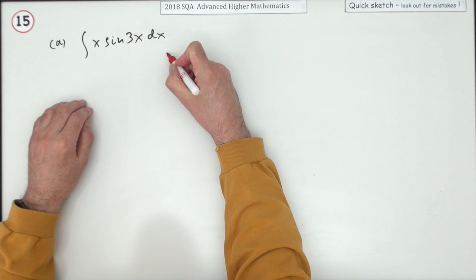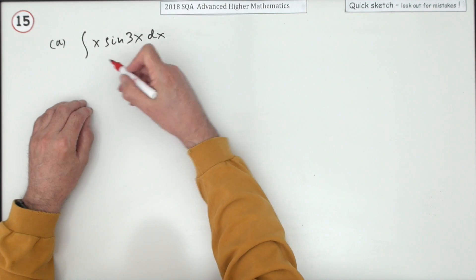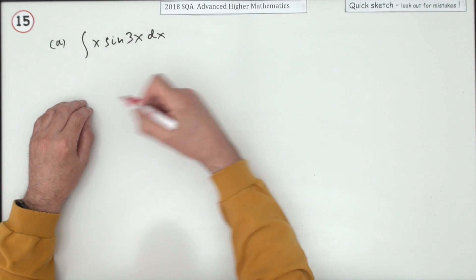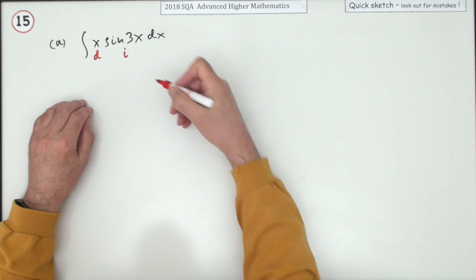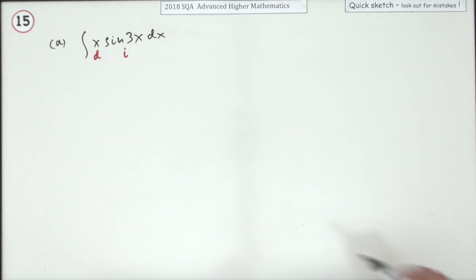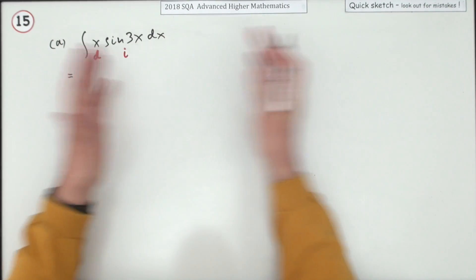Integration by parts comes from the product rule for differentiation. Pick two parts here - which part will you differentiate, which part will you integrate? Well, it's obvious: differentiate the x, that'll whittle it away; integrate the sine.